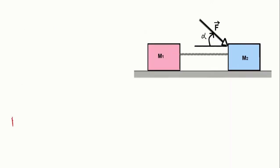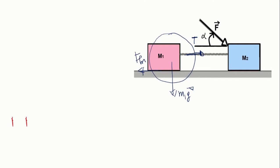Let's start with the first object. We circle the object and look at what pushes and pulls on it. We have the weight M1g, the tension T, and the friction force — because if we are pulling the object to move in that direction, the friction force will be against the motion. We also have the normal force from the surface, which we call normal force N1 because it deals with object 1. The direction of motion is X positive.